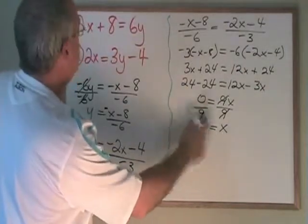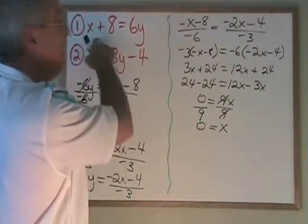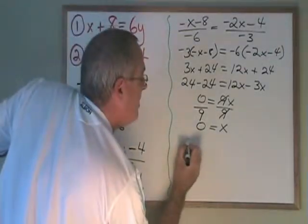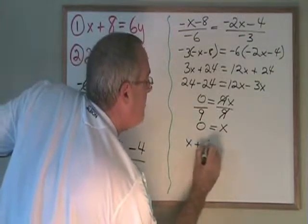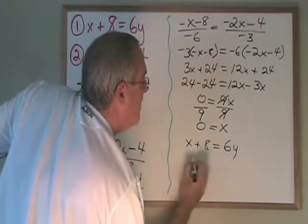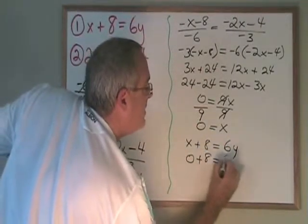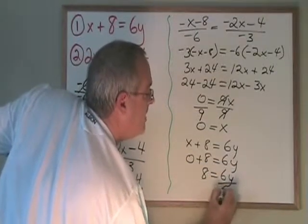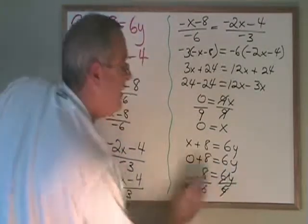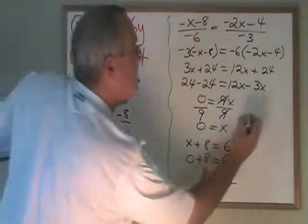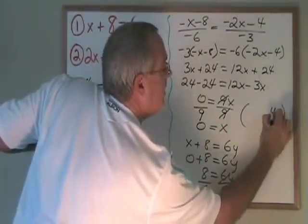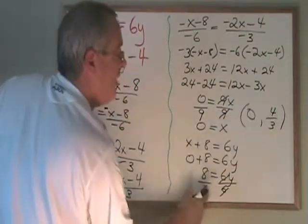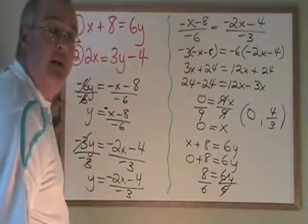Now, I can plug x equals 0 into one of the original equations. I'll choose equation 1 again. x plus 8 equals 6y would give me 0 plus 8 equals 6y. 0 plus 8 is 8. And if I divide both sides by 6, I get y is equal to 8 over 6, which reduces to 4 thirds. x is equal to 0 and y is equal to 4 thirds is the answer to my question.